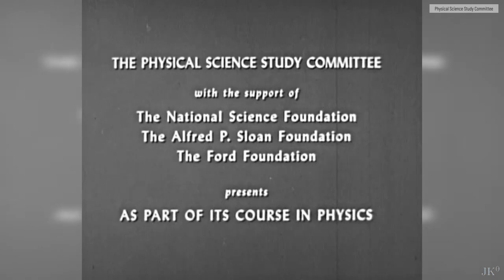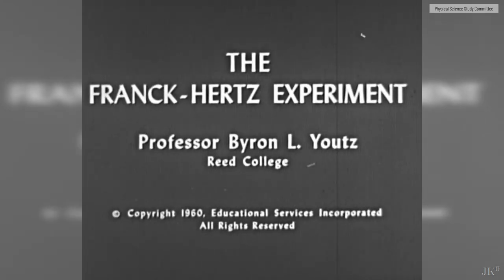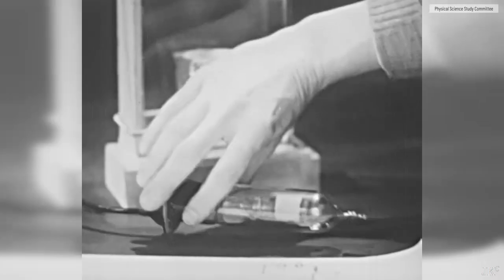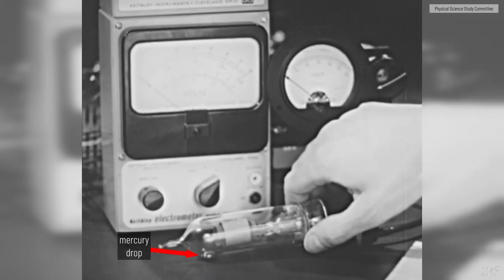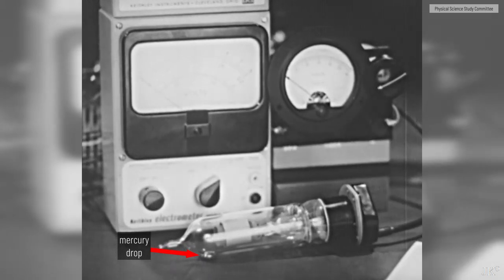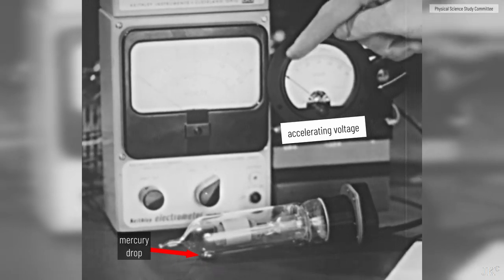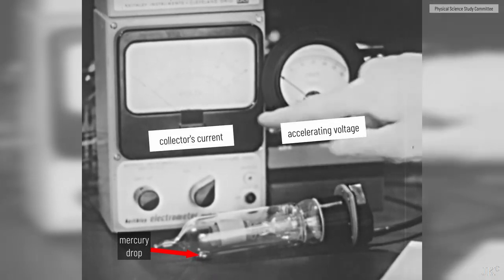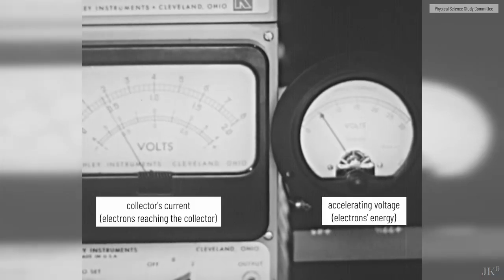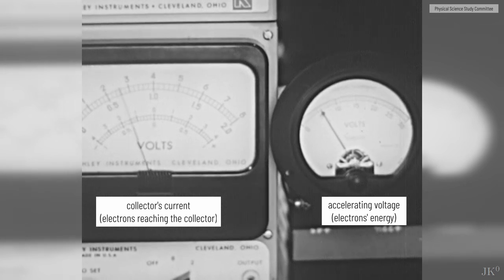There is a fantastic film by the Physical Science Study Committee published in 1961, showing all these details. We will measure the tube current as we change the accelerating voltage. And I will read the accelerating voltage on this meter from 0 to 30 volts and the anode current on the electrometer.